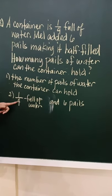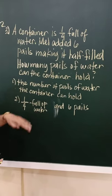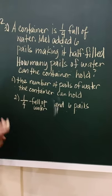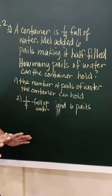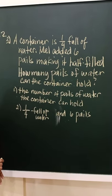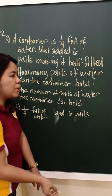For the given, you have one-fourth full of water. So, the container has one-fourth water. Then, six pails were added. So this time, for our plan, we're not going to use the equation. There are problems that are better to solve, it's clearer if we are going to use illustration or drawing. So, I'll draw.